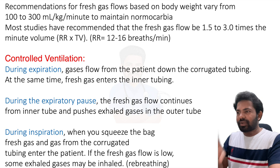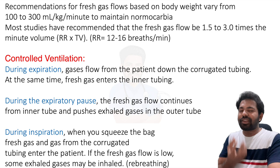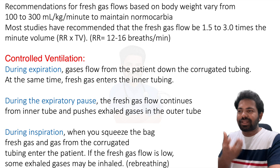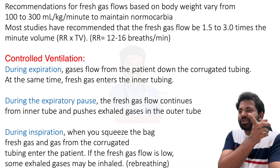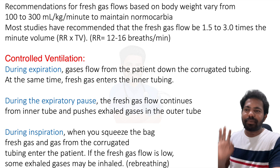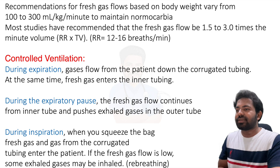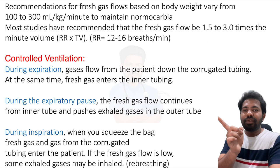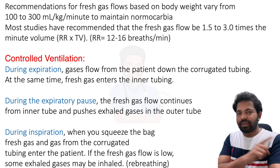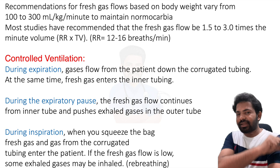After expiration there is an expiratory pause; breathing is typically 12–14 breaths per minute, so there is a pause between breaths. During this pause, fresh gas flow from the inner tube continues and pushes exhaled gases in the outer tube toward the reservoir bag and out through the APL valve. During inspiration in controlled ventilation, you squeeze the bag, and the fresh gas plus gases from the corrugated tube enter the patient — which is re-breathing. If fresh gas flow is low, some exhaled gases may be inhaled.